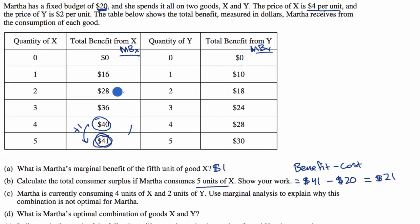The marginal benefit of this first one is going to be 16. We went from zero to 16. The second one, we go from 16 to 28, so it's $12. Then 28 to 36 is eight. 36 to 40 is four extra dollars of benefit. And 40 to 41 is $1 of marginal benefit. For Y, the first unit you get $10 of benefit. The next one increased by $8. The next one, 18 to 24 is six. 24 to 28 is four more. And 28 to 30 is two more.